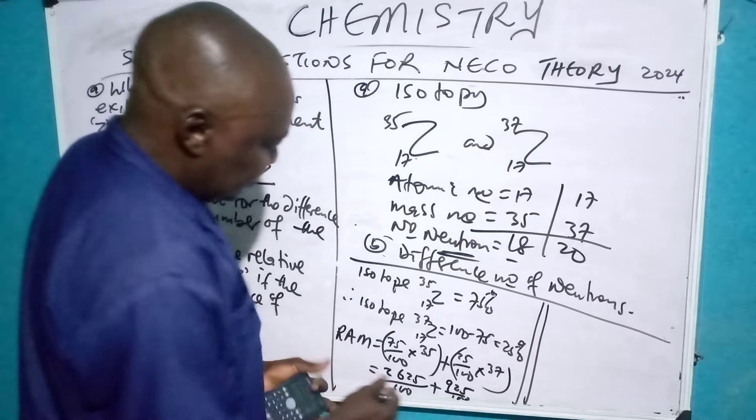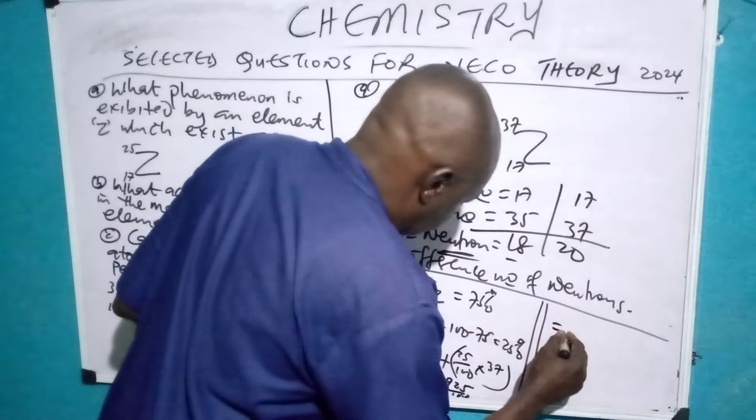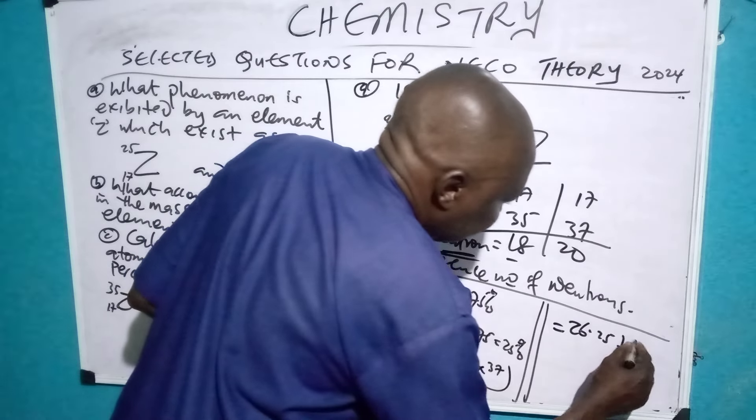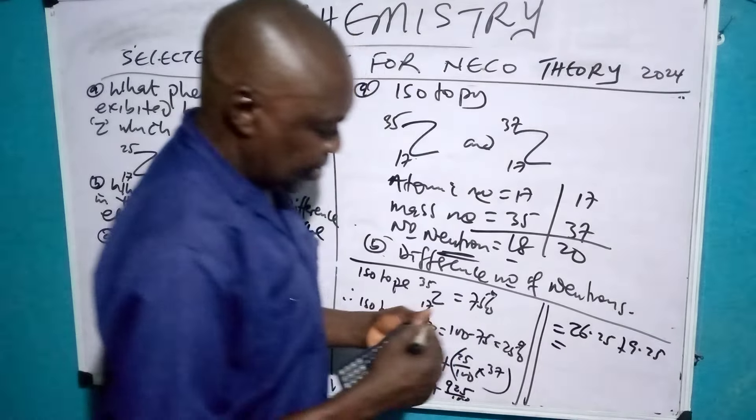So, divide by 100 now. We divide this by 100. It gives you 26.25 plus 9.25. Let's add the 2 and see.